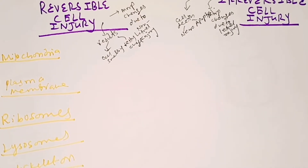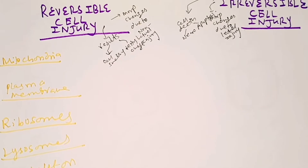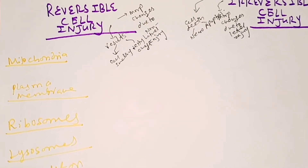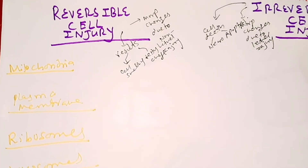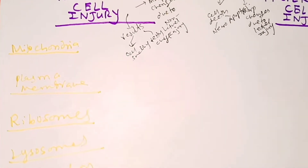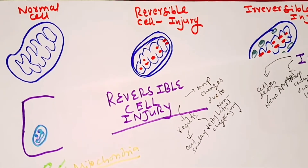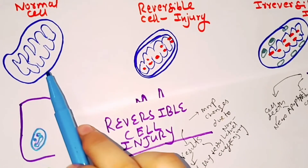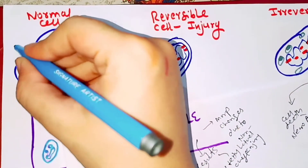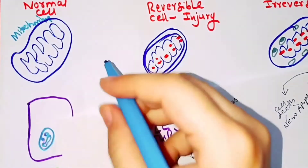Without seeing the diagrammatic view, you will only memorize this by rote. So let's move to the diagrams, which will also make it easier to write and draw in MCQs. This is the normal cell, and this is the mitochondria of the normal cell.